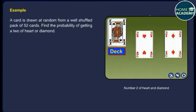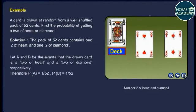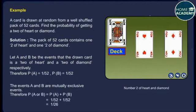A card is drawn at random from a well-shuffled pack of 52 cards. Find the probability of getting a 2 of heart or a 2 of diamond. Solution. The pack of 52 cards contains one 2 of heart and one 2 of diamond. Let A and B be the events that the drawn card is a 2 of heart and a 2 of diamond respectively. Therefore P(A) = 1/52 and P(B) = 1/52. The events A and B are mutually exclusive. Therefore P(A or B) = P(A) + P(B) = 1/52 + 1/52 = 1/26.